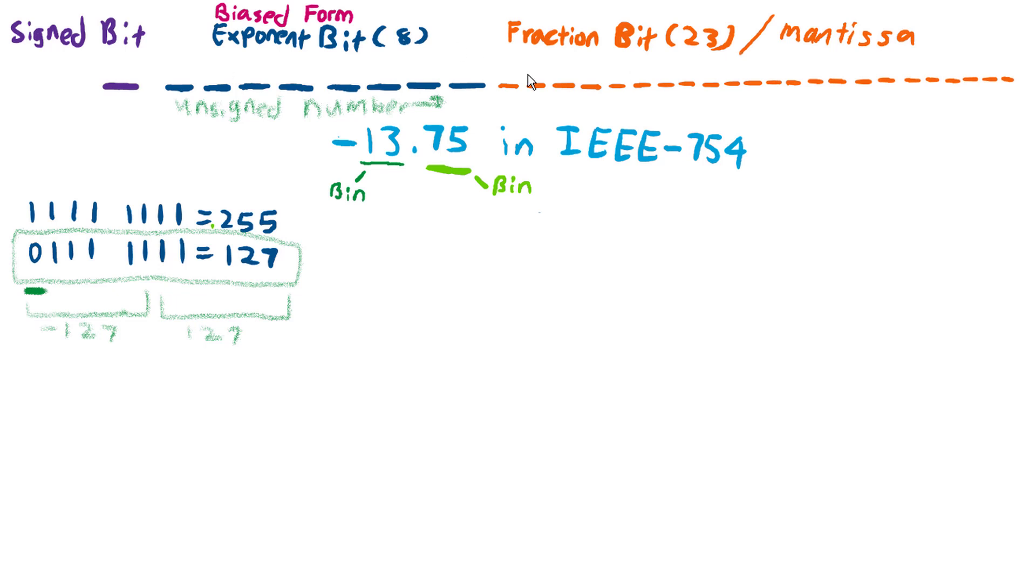The first step is we are going to convert this part into binary format and also the decimal part into binary format. The two processes are a bit different.